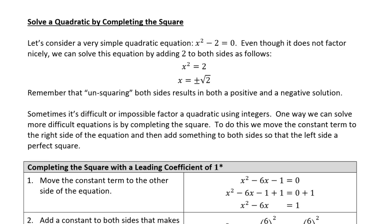If you look at this simple quadratic x squared minus 2, you could try to factor that, but you'd be looking for factors of negative 2 that add to 0, and it doesn't work nicely with integers. So we just add 2 to both sides and then take the square root of both sides. We have to remember when you unsquare both sides that x could have been positive or negative. So the solution is x equals plus or minus square root of 2 — that's a shorthand for two solutions: square root of 2 and negative square root of 2.